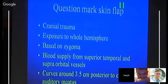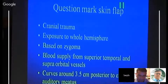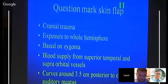The question mark flap is a large flap used in cranial trauma to expose the whole hemisphere. It is based on the zygoma with blood supply from the superficial temporal and supra-orbital vessels — the temporal vessels should be preserved. It curves approximately 3.5 centimeters posterior to the external auditory meatus, with the anterior limb extending up to the hairline.